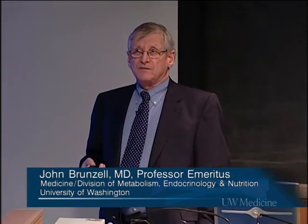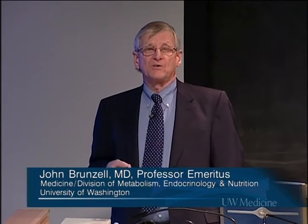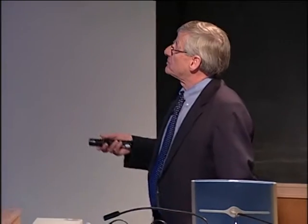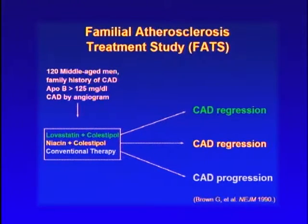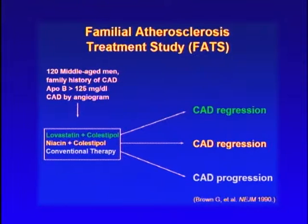Part of the problem is that single monotherapy is often not enough. Now that drug companies have finished monotherapy trials, people are starting combination therapy trials. The first was the Familial Atherosclerosis Treatment Study, or FATS, done at the University of Washington by Greg Brown in cardiology, published in the New England Journal in 1990. He enrolled 120 middle-aged men with a family history of coronary disease, elevated ApoB, and angiographically confirmed coronary artery disease. He randomized them to double therapy with two different drug combinations or conventional therapy — diet and cholestyramine alone if LDL was very high. Double therapy caused coronary disease regression by repeat angiogram two and a half years later, while conventional therapy patients had disease progression.